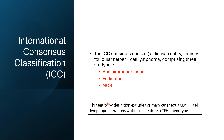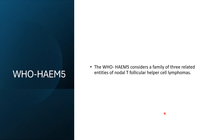The International Consensus Classification considers this as one disease entity with three different subtypes: angio-immunoblastic T cell lymphoma, follicular, and NOS. By definition, this entity excludes any primary cutaneous CD4-positive T cell lymphoma proliferation, which also has features of T follicular helper phenotype. The fifth edition of WHO considers a family of three related entities instead of one disease with three different subtypes.